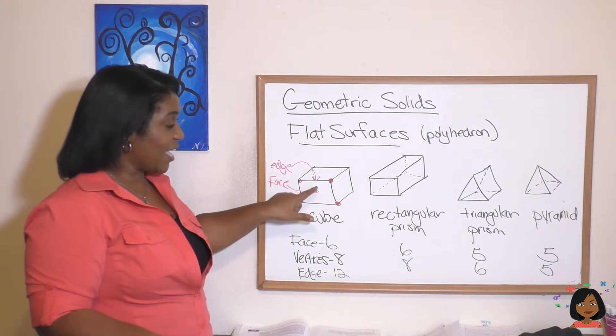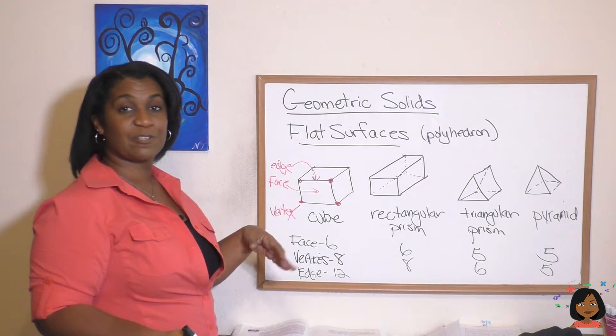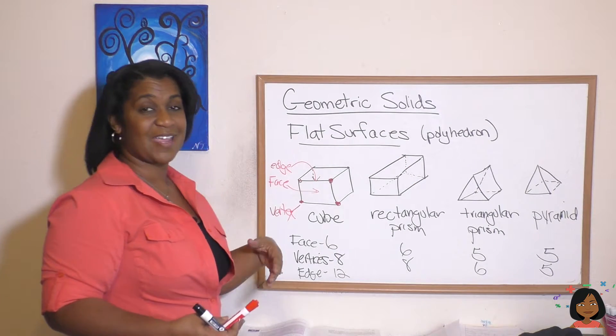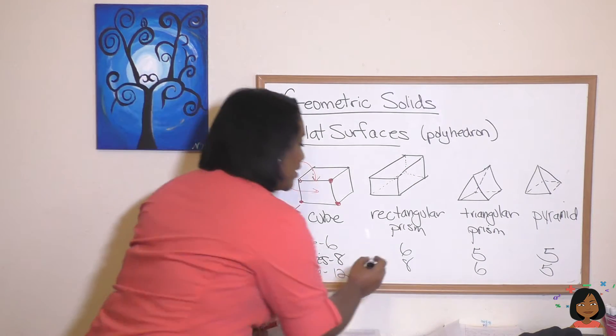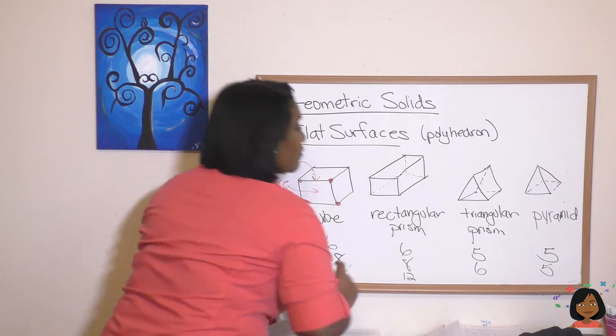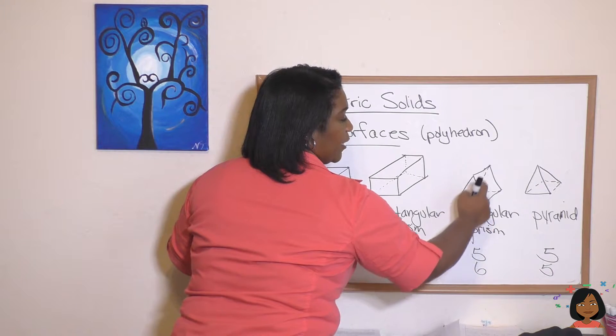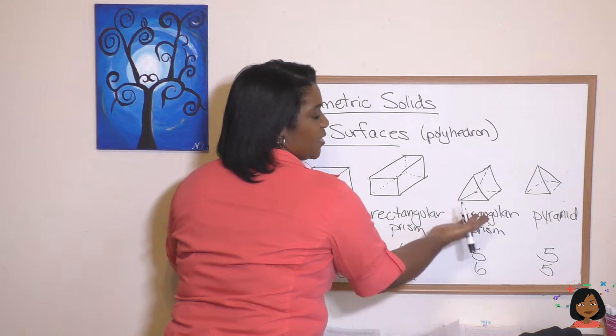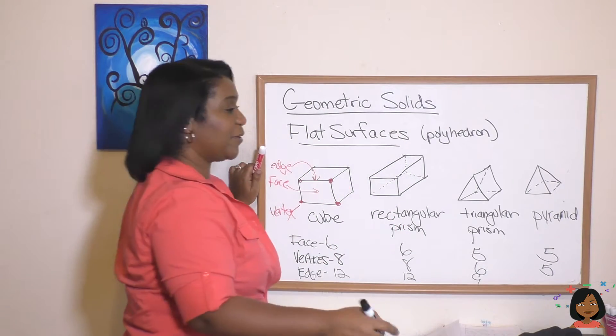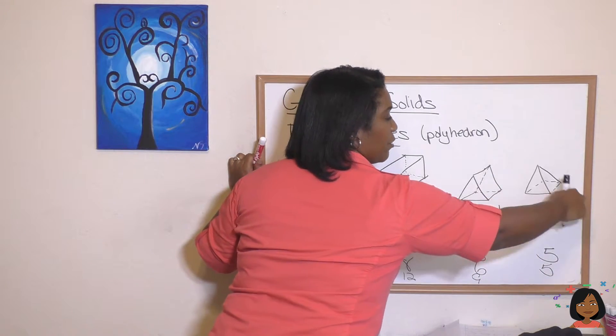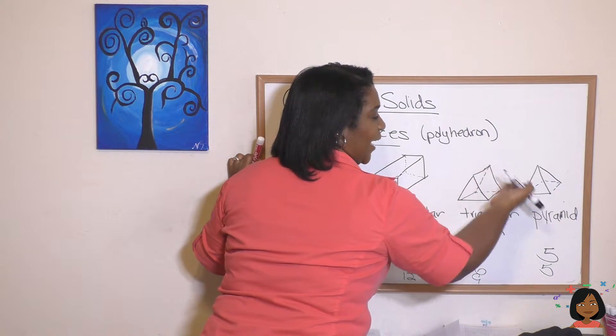The only difference between the cube and the rectangular prism is that the sides of our cube are equal. So if we squished in our rectangular prism so this side wasn't a rectangle it was a square, it would be a cube. So we're going to have twelve edges. Triangular prism: here we go - one, two, three, four, five, six, seven, eight, and one up on top is nine. And what about our pyramid? One, two, three, four is back there, and then five, six, seven, eight.